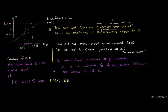We write: |f of x minus L| is less than epsilon. This is the key inequality.